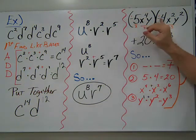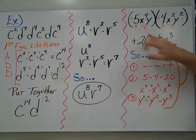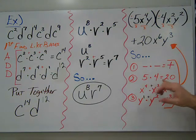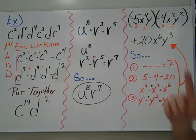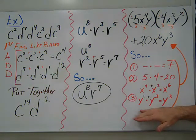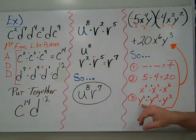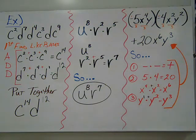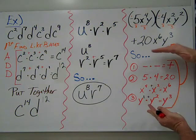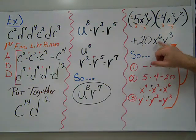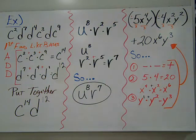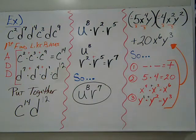Our last example on this side includes signs and everything together. Two negatives gives us a positive. Then we multiply our numbers: 5 times 4 gives us 20. For like bases: x to the fourth times x squared — 4 + 2 = 6, giving x to the sixth. For y, no power is written so it's assumed to be 1: 1 + 2 = 3, giving y to the third. Final answer: positive 20 times x to the sixth y to the third.